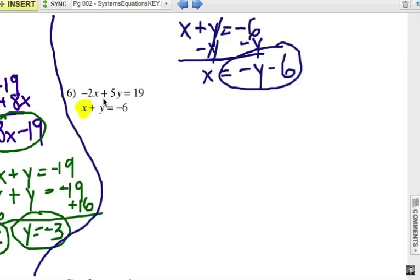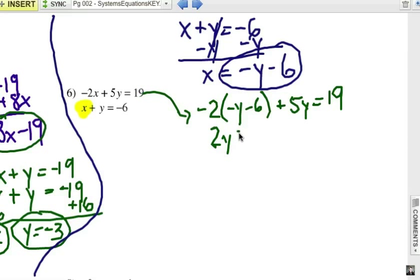So in the first equation instead of x I can substitute in that expression. I have to be careful about these negative signs now. Here we go: -2 times x, but x is -y - 6. I'm substituting it in there, and then it says + 5y, and that equals 19 from the first equation. Multiply with the distributive property: that would be positive 2y + 12 + 5y = 19.